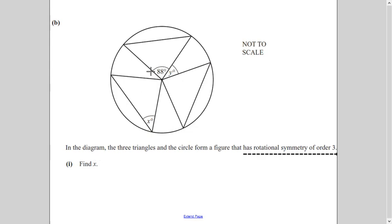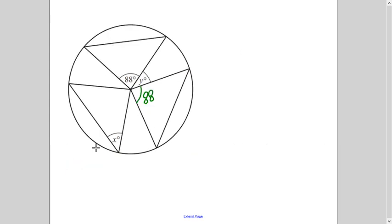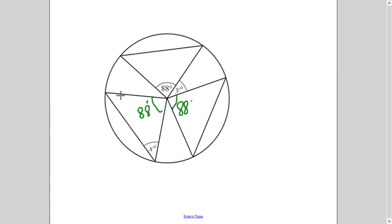You have to find out x. So what do you notice? If this triangle is the same, then what this angle will be? Yes, 88, right? So this angle will be 88. Similarly, in this triangle, if you rotate it, when this will fall here, what this angle will be? 88, right?